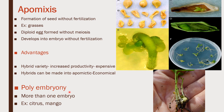Next is polyembryony. Poly means many, and polyembryony means formation of many embryos — more than one embryo formation in a seed. Examples for polyembryony are citrus and mango. Polyembryony takes place when the nucellar cells surrounding the embryo start dividing and form additional embryos. If you have any doubts, feel free to type in the comments section. Thank you for listening.